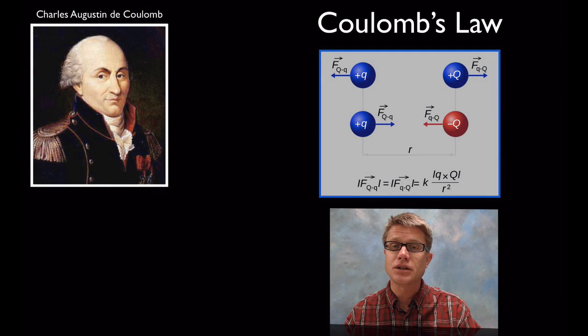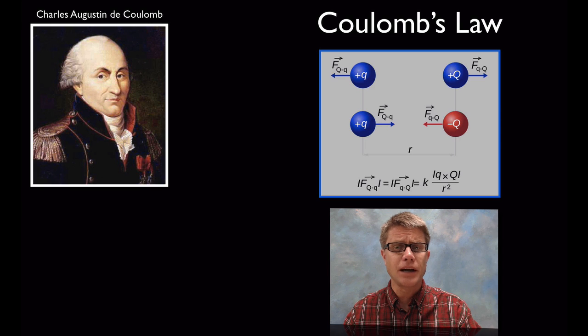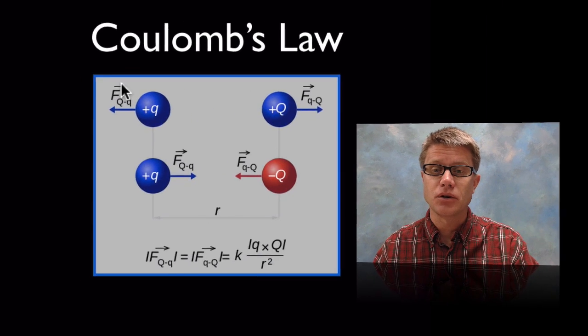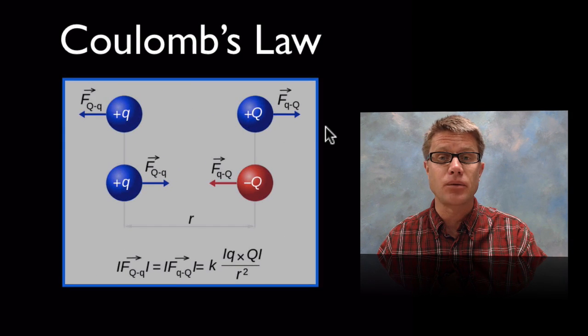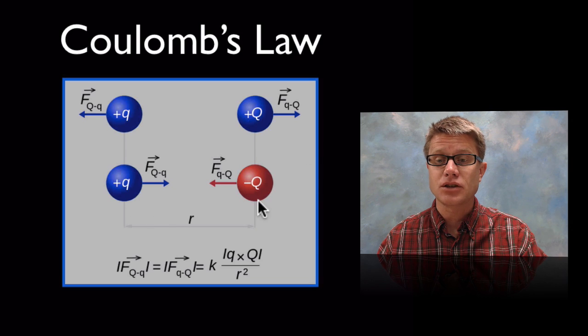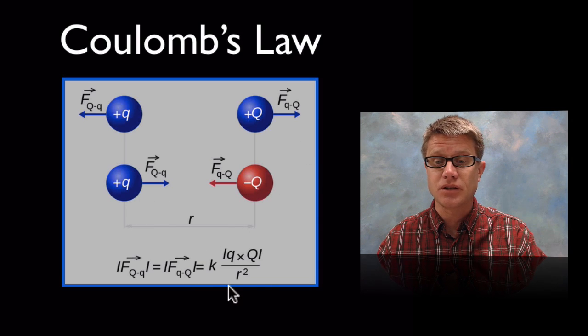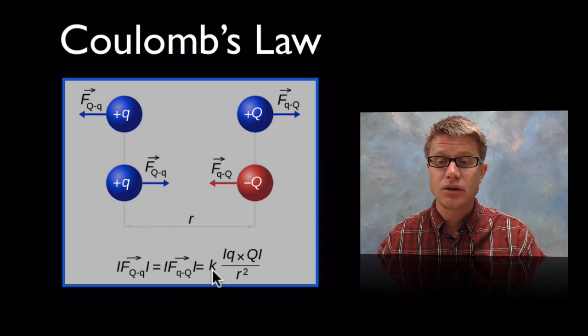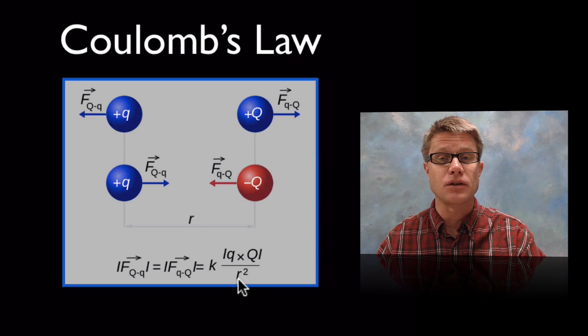So who was Coulomb? He was a French physicist and what he was doing was studying charges. A lot of people thought there was some law that could be applied to charges. And he was the first one to really quantify that. So essentially if we have two like charges they repel. And if we have two unlike charges there's going to be an attraction. And here's the equation right here. You have a Coulomb's coefficient and then we're going to have multiplying the charges and then we're going to take the radius squared.